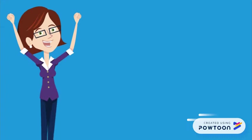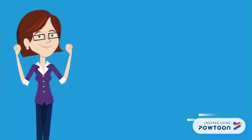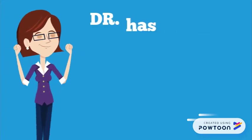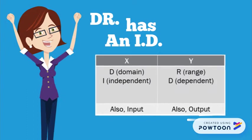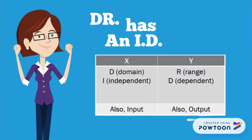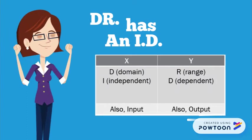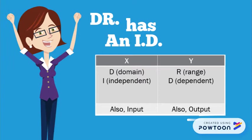The first thing you should write down on your formula sheet is 'Doctor has an ID.' Remember, the X values are the domain and independent variables, and the Y is range and dependent variables.